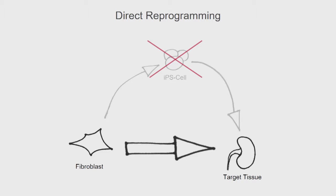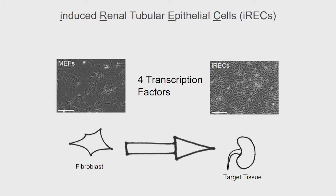We wanted to turn a fibroblast directly into a kidney cell. This is called direct reprogramming, and it took us a while, but eventually we found four transcription factors that mediate the conversion of fibroblasts directly into what we call induced renal tubular epithelial cells, or short, IRECs.